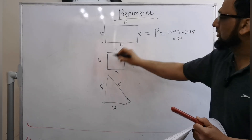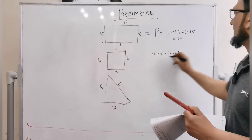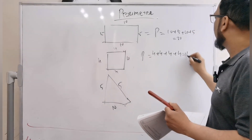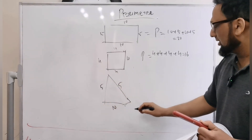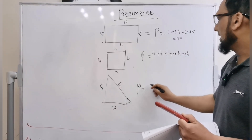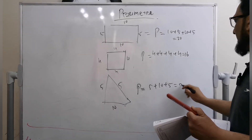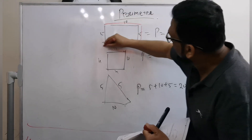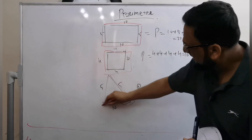For the square, all sides are equal, so you add 4 plus 4 plus 4 plus 4, giving you a perimeter of 16. For the triangle, the perimeter is 5 plus 10 plus 5, which equals 20. You simply add all sides to get the perimeter.